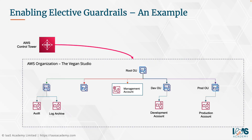For the purposes of this lab, we're going to enable one of the elective guardrails in Control Tower and apply that guardrail to the development account to showcase exactly how it works. Before we do that, I also wanted to show you how to set up user accounts using the IAM Identity Center, previously known as the Single Sign-On Service, so that you can manage users within the Control Tower environment and give them access to various accounts with specific privileges.